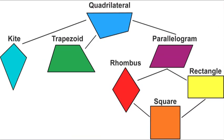Quadrilaterals — they are polygons. Quadrilaterals have four sides. We can classify them like a family tree — they're all related.